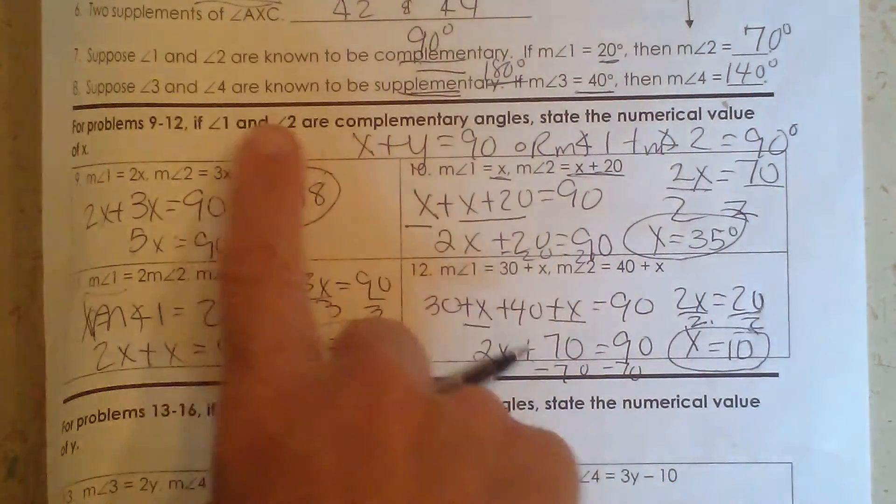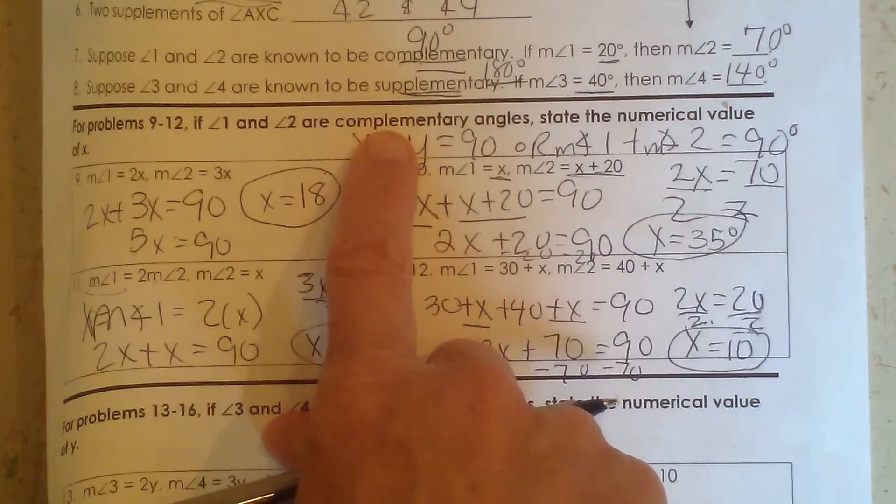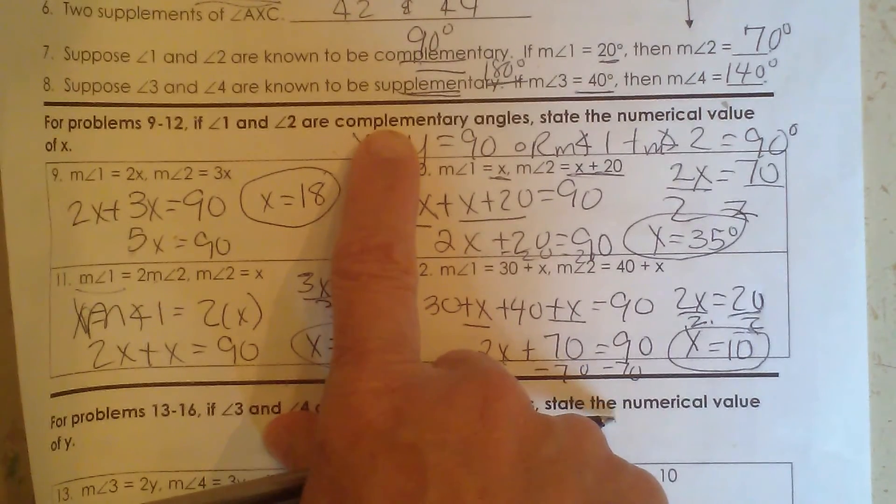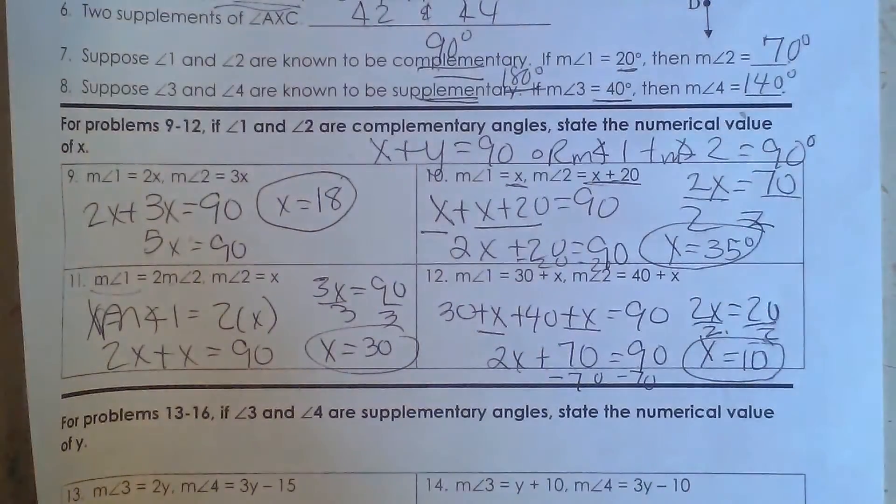So let's just summarize. When you're trying to find the sum of two angles that are complementary, you're going to add them up to 90 degrees. Thank you for watching Moomoo Math. And don't forget to subscribe.